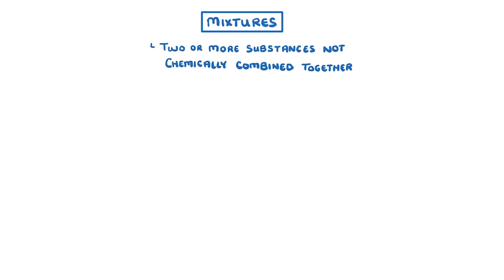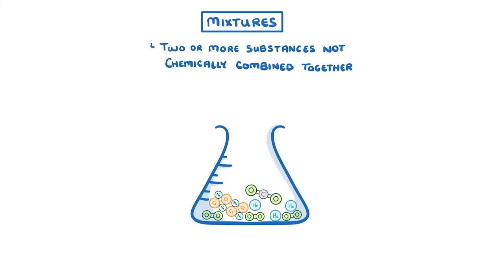Before we finish, I just wanted to quickly mention mixtures, which consist of two or more substances that are not chemically combined together. So if we took a beaker and we put in some oxygen molecules, some sodium chloride which is a compound, some individual helium atoms, and a molecule of carbon dioxide, this entire thing would be a mixture. Because it contains lots of different substances, but importantly, they haven't reacted with each other. So there's no chemical bonds between the individual substances, they've just been physically mixed together.